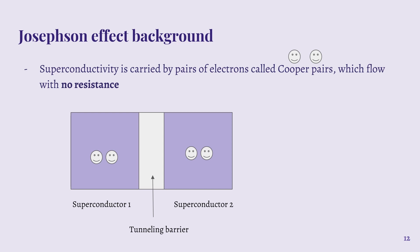So just a little bit of background. Superconductivity occurs when electrons pair up into what are called Cooper pairs, and these Cooper pairs flow with no resistance, which is what is observed as superconductivity.